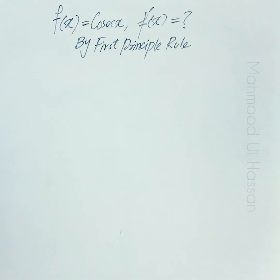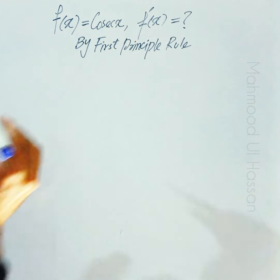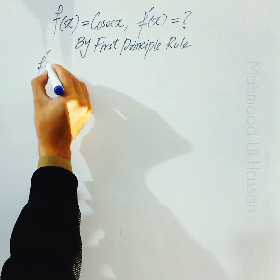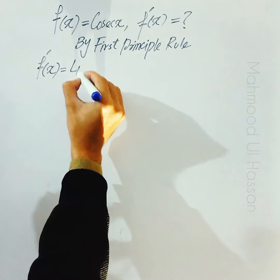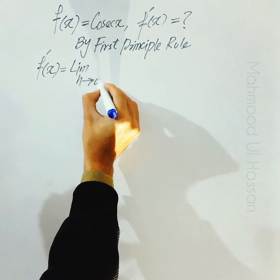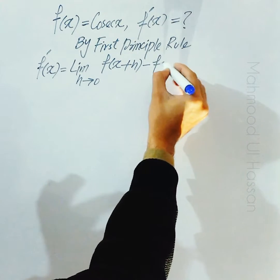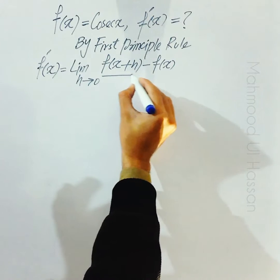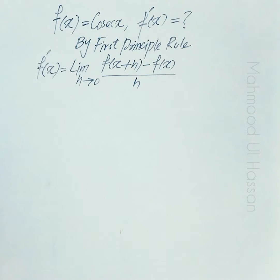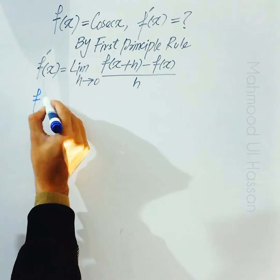f(x) = cosecant of x, and we are going to find f'(x) by first principle rule — by definition of derivative of a function. We know that f'(x) is equal to limit h approaches to 0, f(x+h) minus f(x), divided by h. This is the definition of derivative of a function. ہمارے پاس یہ given ہے کہ function f(x) برابر ہے cosecant x کے۔